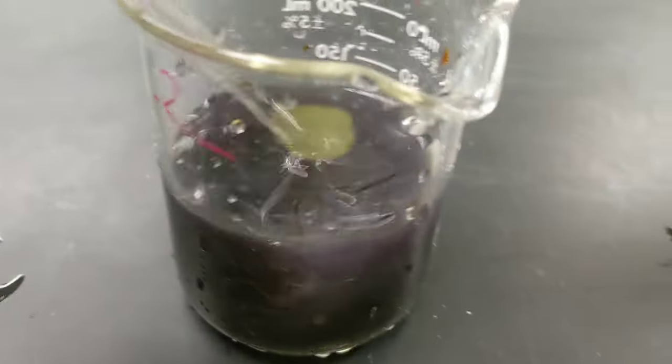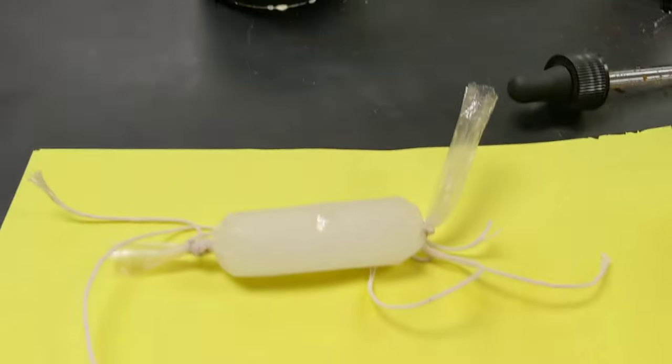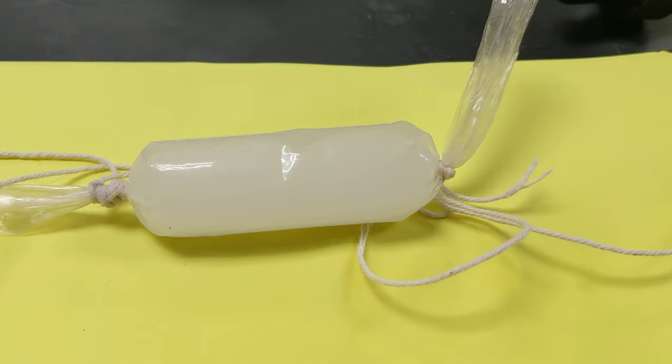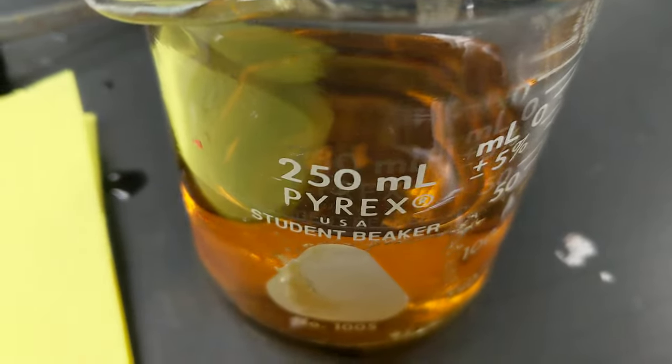So here's what the experiment is going to entail. We're going to take the starch, which is inside the tube, and put it in a beaker of iodine.